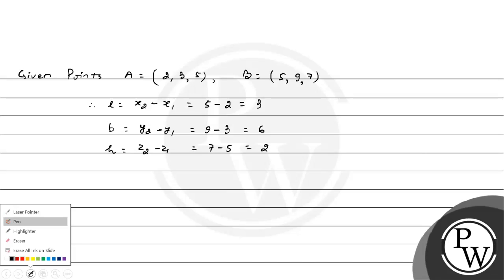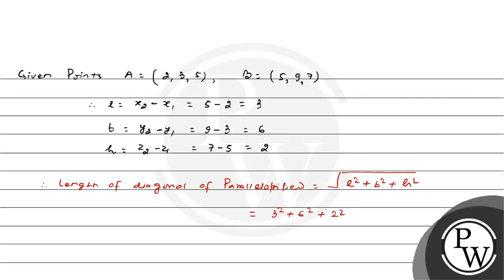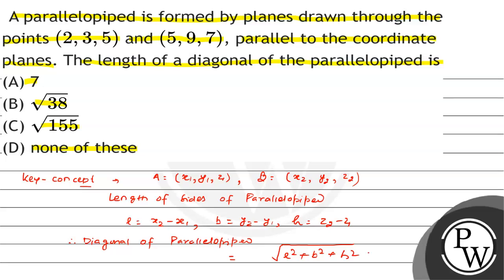And h = z2 − z1 = 7 − 5 = 2. Therefore, the length of the diagonal of the parallelepiped = √(L² + b² + h²) = √(3² + 6² + 2²) = √(9 + 36 + 4) = √49 = 7 units. This is the required answer, and the correct option is option A.